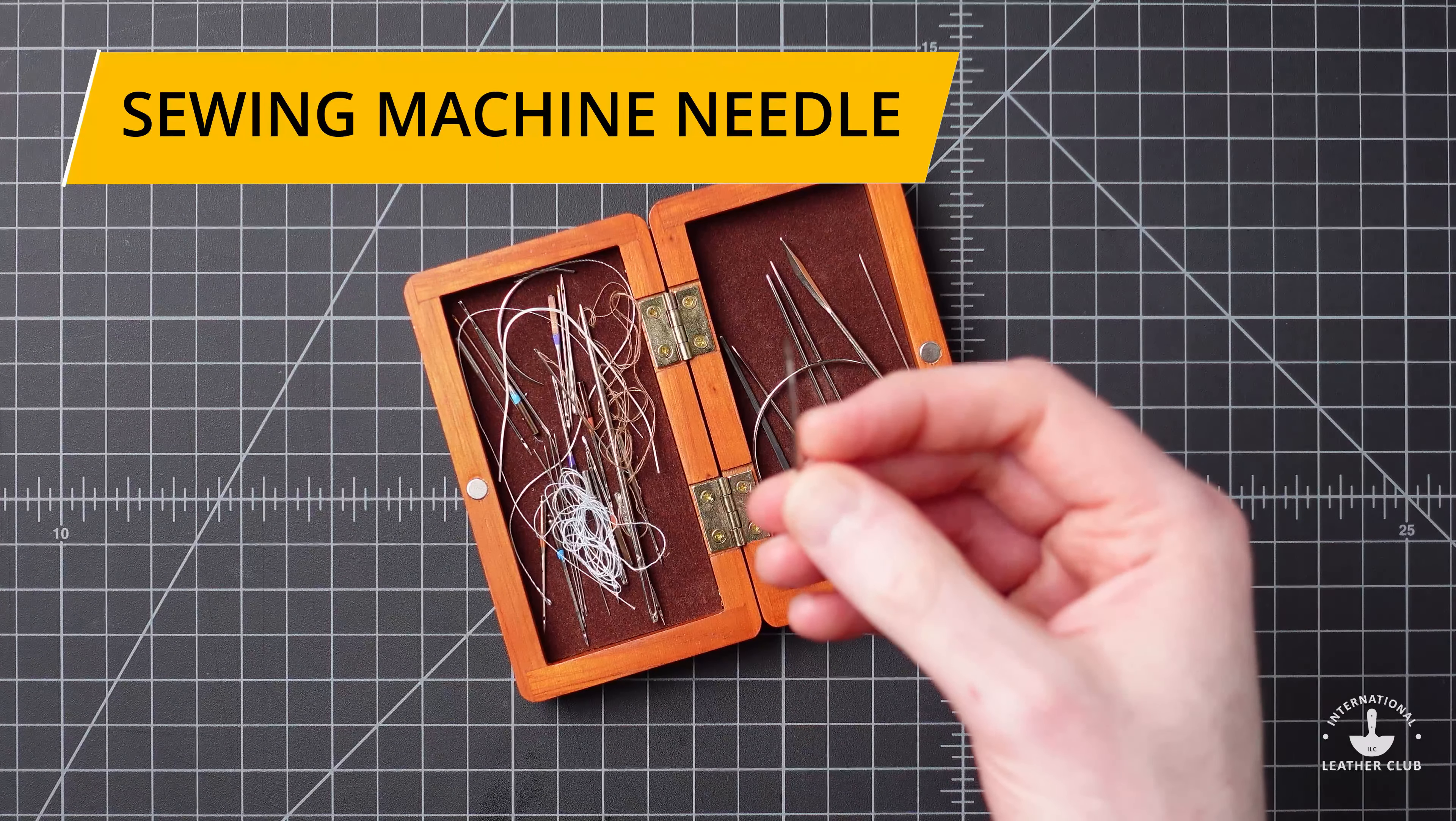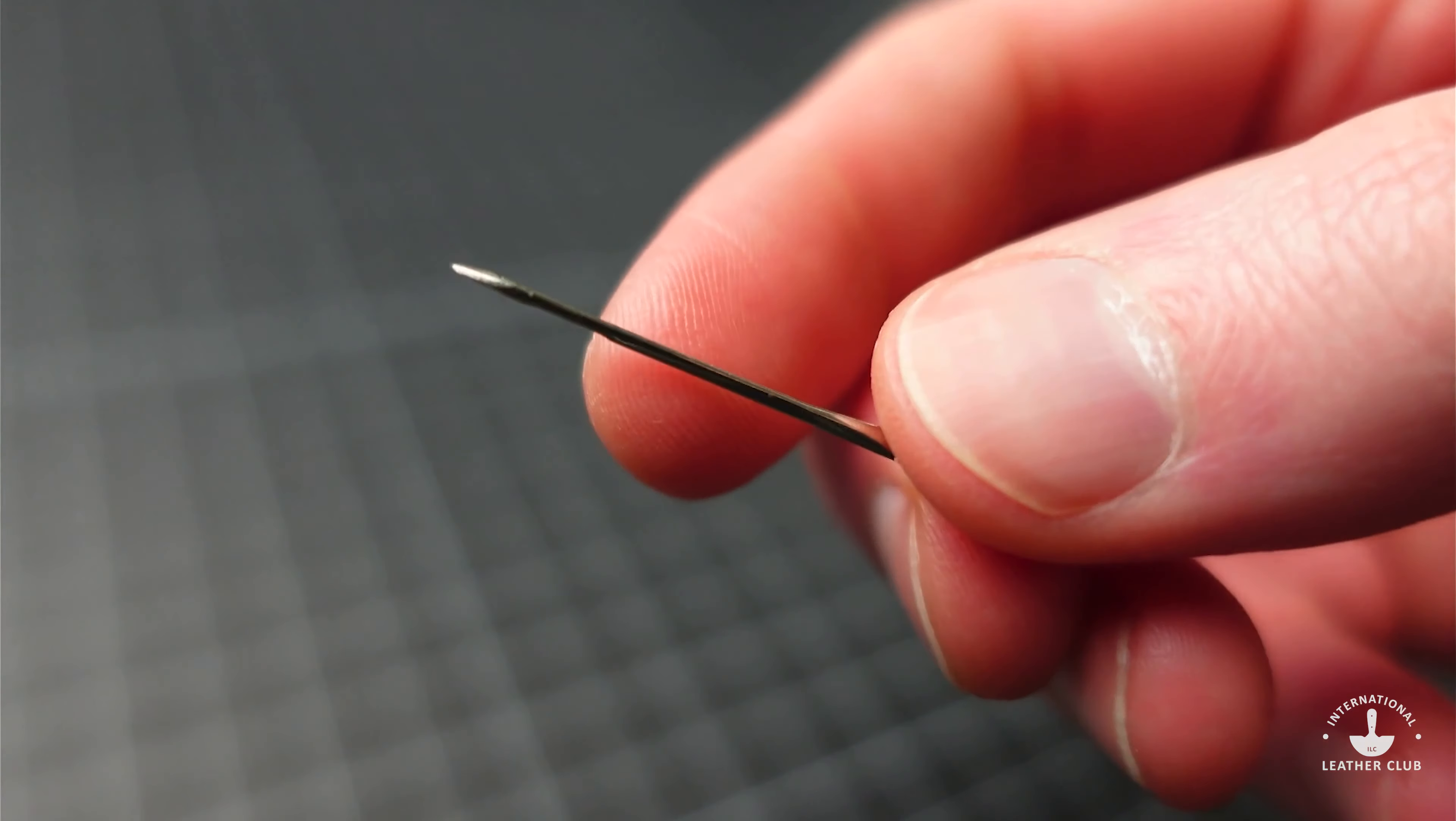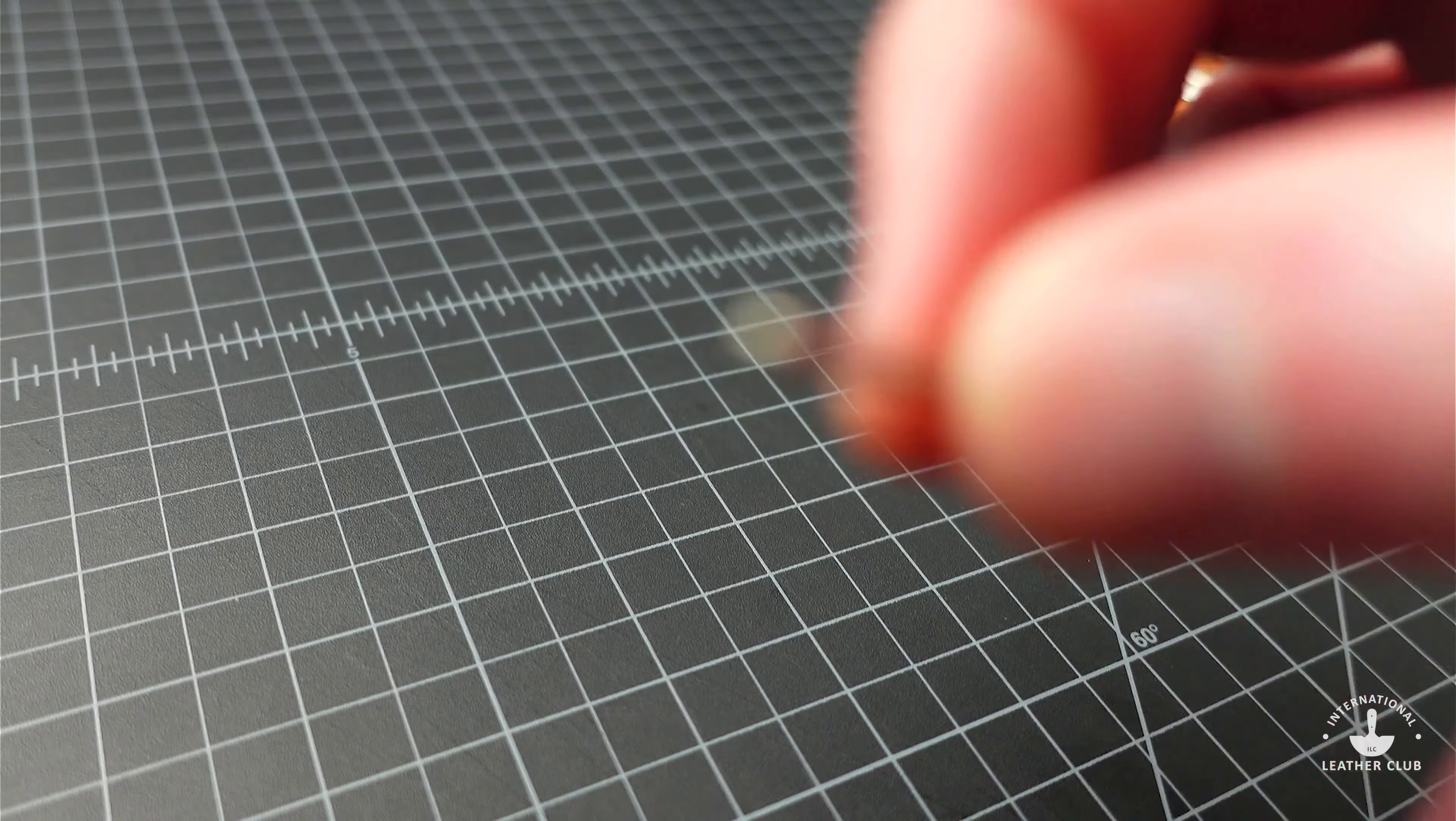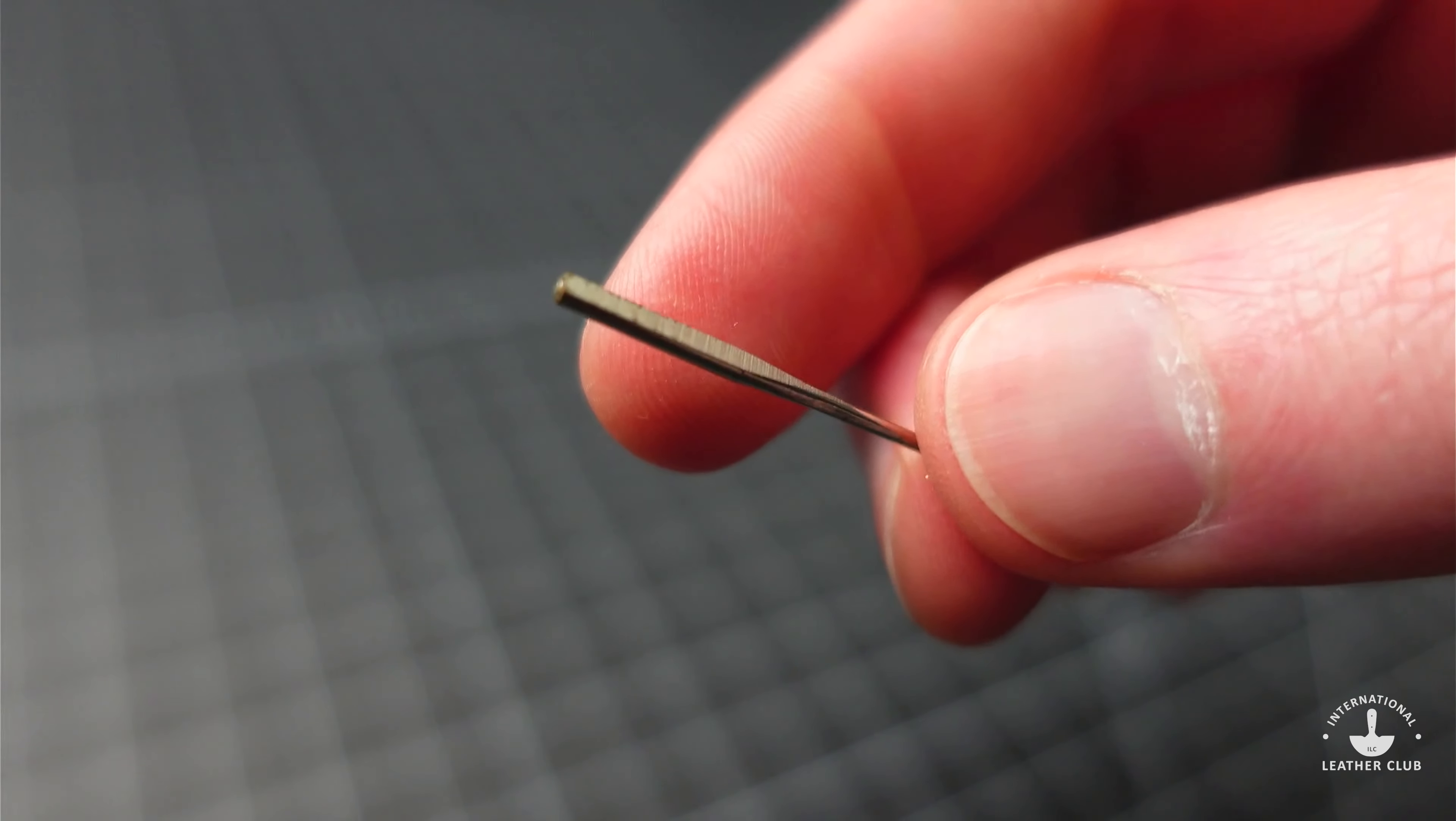And then we have our sewing machine needles. So most of what we talked about thus far has been hand needles that we're going to be using for hand and manual sewing. There are obviously some incredible machines out there. So machine needles have a special shank that's right there that allows it to seat into the sewing machine. There are two main shank styles: flat and round.